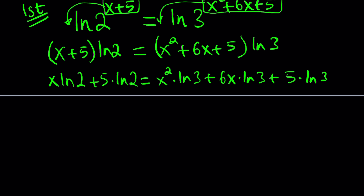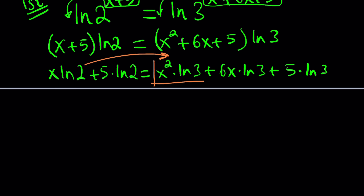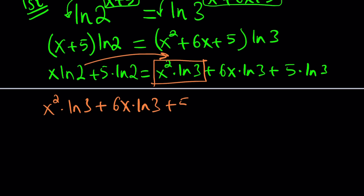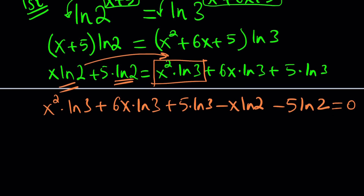So let's do this. We'll put the right-hand side on the left-hand side — switch sides and rearrange the terms so that you can get a quadratic equation in x. We get x squared ln 3, then 6x times ln 3 plus 5 times ln 3, and then we're subtracting these two things: minus x ln 2 minus 5 ln 2. The next thing is to set it equal to 0, because when you put everything on the same side, the other side will be 0.